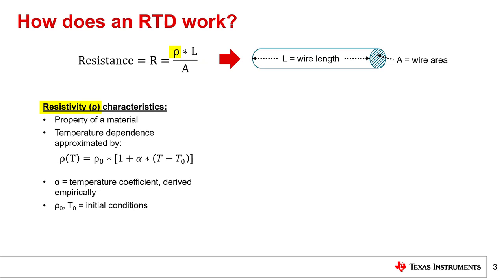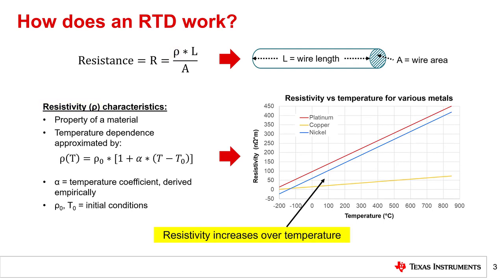Resistivity is a material property that has a temperature dependence approximated by the equation shown here. Note that the alpha term in this equation is a temperature coefficient that is derived empirically, and some initial conditions are required. Plotting resistivity as a function of temperature for certain metals produces graphs that are highly linear, as shown. Assuming the resistivity approximation is valid across the given temperature range, the resistance will also be linear relative to the wire length or area. Note that not all materials follow this approximation, but it is generally valid for the three metals used in the plot: platinum, copper, and nickel. As a result, these metals are the most widely used materials for all RTD types.